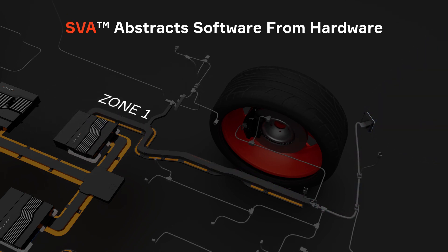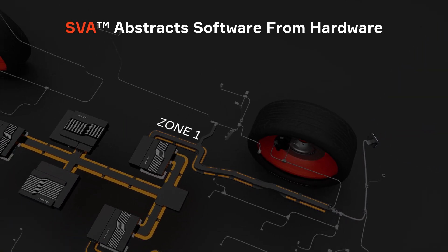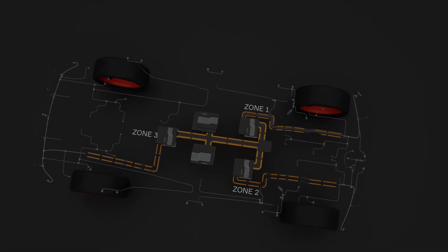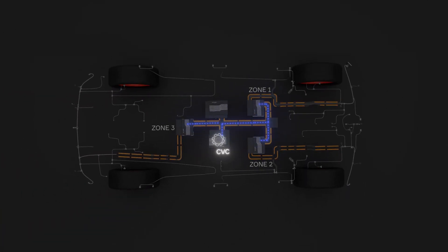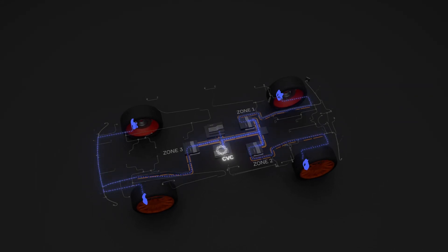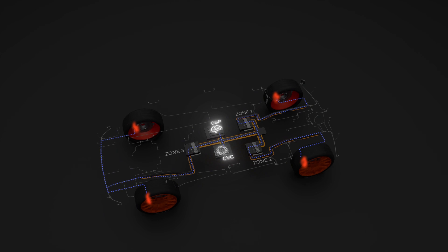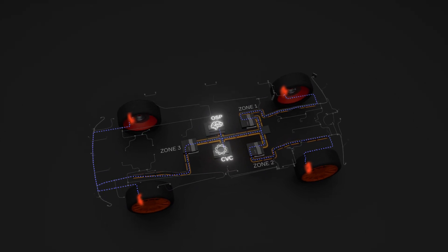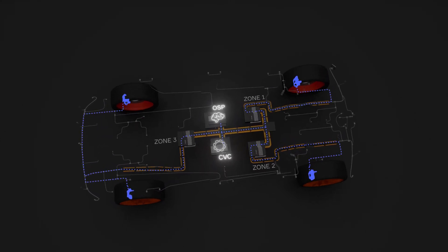The second principle is that SVA abstracts software from hardware. The central vehicle controller, or CVC, handles all communications within the vehicle, coordinating the zone controllers, abstracting body control functions, and translating decisions made by the vehicle brain into actions carried out by the nervous system.